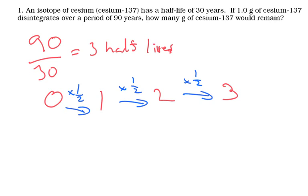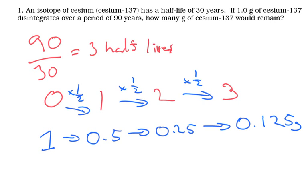So to start off with, well, we've got one gram. Okay, half of one gram is 0.5 after the first half-life. Okay, after the second half-life, you'll have 0.25 grams left. And then finally, after the third half-life, 0.125 grams. And that's going to be our final answer, 0.125 grams.